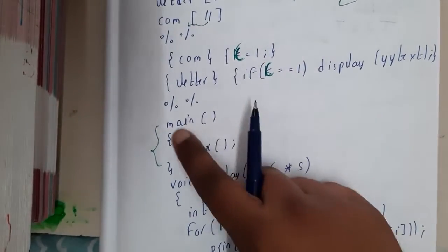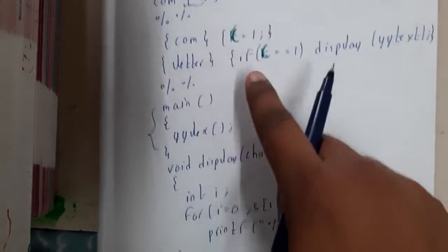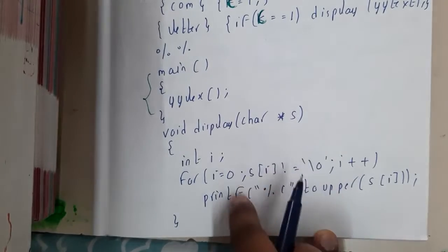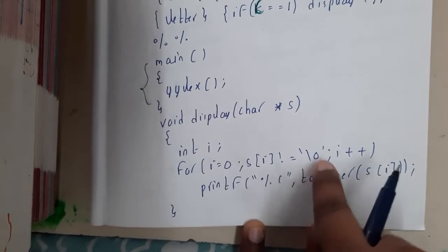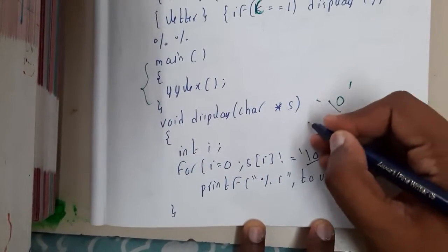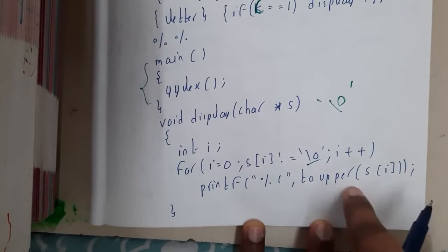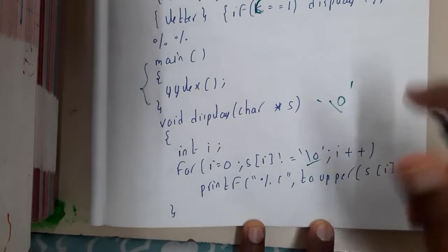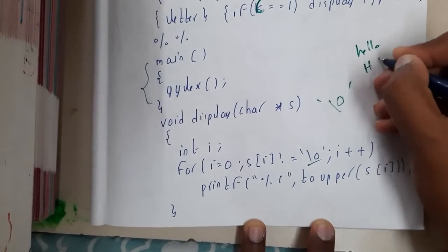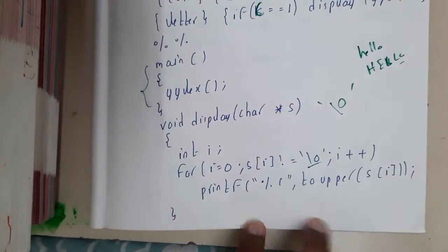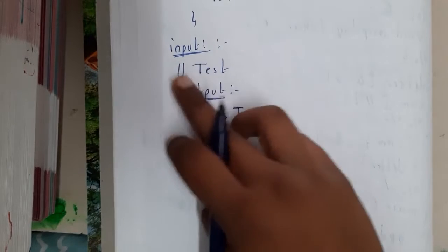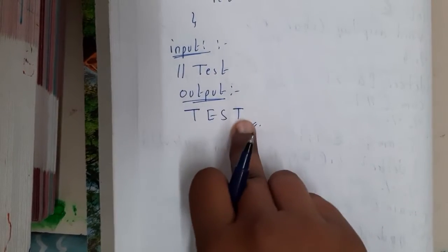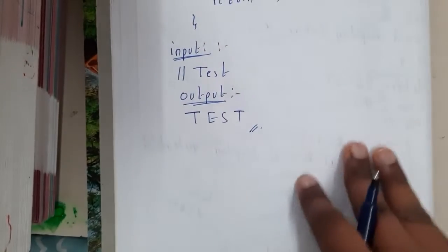After %% comes the main function — remember that calling yy_lex() inside main is mandatory; this is where execution starts. The display function takes a char pointer s: using a for loop from i=0 until s[i] is not equal to null terminator \0, it prints toupper(s[i]), converting each character to uppercase. So input //test gives output TEST in all caps. At the end, yy_wrap() returns 1 to signal execution is done.